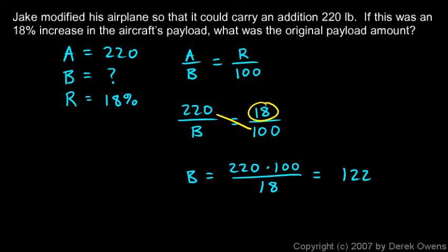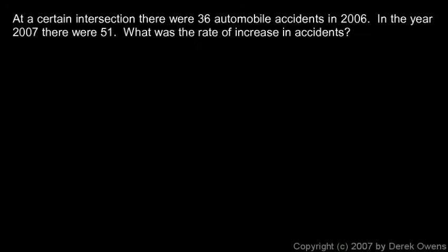Okay, this one involves some traffic engineering, which is really a pretty important field, kind of a subset of civil engineering. We're told here that at a certain intersection there were 36 automobile accidents in 2006. In the year 2007, the next year, there were 51. What was the rate of increase in accidents?